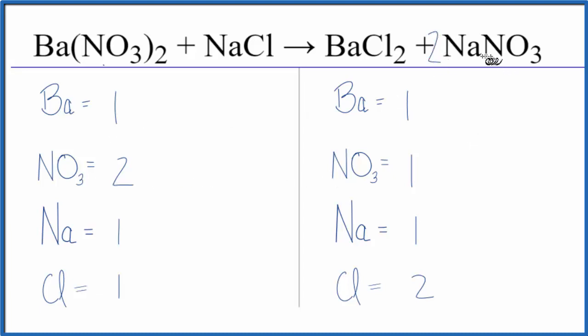two as our coefficient here in front of the NaNO3. So we'd have two times one nitrate, that would give us two, and one times two there, that would give us two sodium atoms. Let's balance the